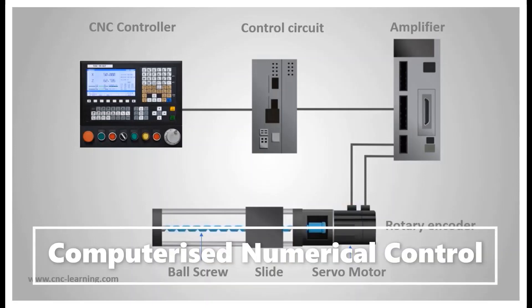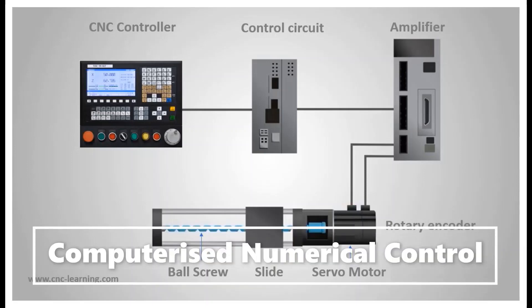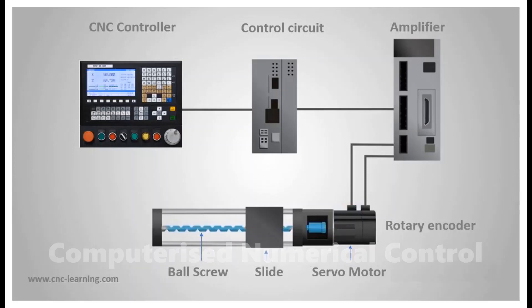CNC means computerized numerical control. To understand the working of a CNC let us understand the important components of a CNC machine: a CNC controller which will store the CNC program, a control circuit to generate voltage signals as per CNC program instructions, an amplifier to amplify the signals, a servo motor to rotate the ball screw which in turn will move the slide, and an encoder to measure the actual rotation of the ball screw which in turn will tell the actual movement.